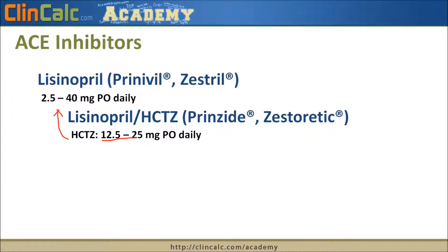The brand name for the lisinopril-HCTZ combination product is Prinzide or Zestoretic. These are fairly similar to the brand names of lisinopril alone, but longer — one way to remember this is that because it has two products, it makes sense the name is longer. Also, Prinzide has the suffix '-zide,' just like hydrochlorothiazide, which is another way to remember it.